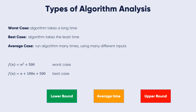For a given algorithm, we can represent the best, worst, and average cases in the form of expressions. Let f(n) be the function representing the given algorithm. For example, f(n) = n² + 500 represents the worst case, compared with f(n) = n + 500 which represents the best case. Similarly, the average case expression defines the input for which the algorithm takes the average running time or memory.